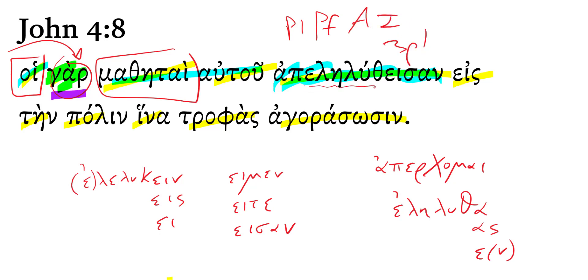You see that eleluthah, right? Op ercomai, to go away or to depart. You may remember the perfect form of ercomai is eleluthah. You can kind of see that perfect stem there.